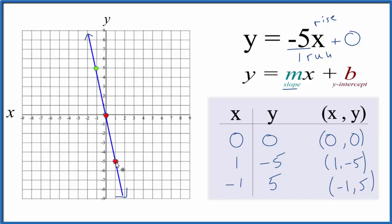We could go down 1, 2, 3, 4, 5, and over 1. That would be on the graph as well, but we're off the paper now. So we could go the opposite direction. We could go up 5, 1, 2, 3, 4, 5, and over 1 in the opposite direction. That's on our line too.